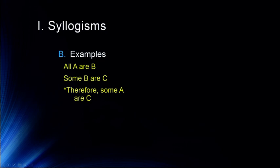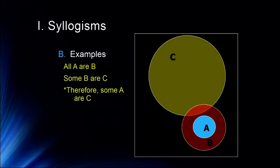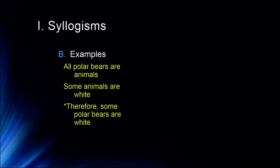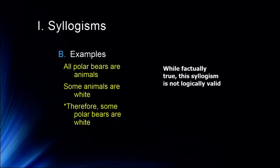Some other examples: if all A's are part of category B, and some of category B are in category C, it is illogical to conclude that some A's are part of category C — we don't actually know that. There are two possibilities; it's possible that none of the A's are included in category C at all. For instance: all polar bears are animals, some animals are white, therefore some polar bears are white. While factually true, this syllogism is not logically valid.